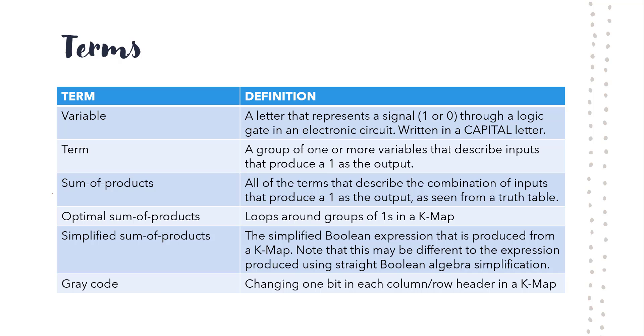Now, these three actually are in order, 1, 2, 3, of how we work with the Karnaugh map. We produce from a truth table the sum of products. We then put the sum of products into our Karnaugh map in order to produce what we call the optimal sum of products. And from there, we can create the simplified sum of products as our answer.